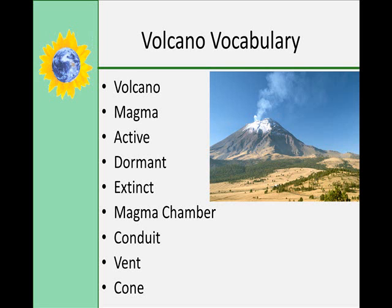A volcano is dormant if it hasn't erupted for a long time — less than one million years ago — but could again one day. An extinct volcano will never erupt again, usually because the plates have moved far enough away from the magma upwelling so that it can no longer come up.